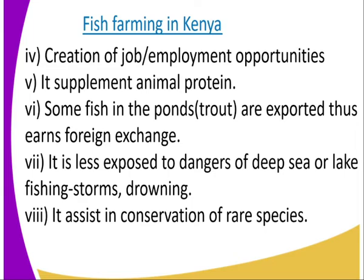Number eight, fish farming assists in the conservation of rare species — those species that are rare and cannot be gotten easily. We keep them in the fish pond.